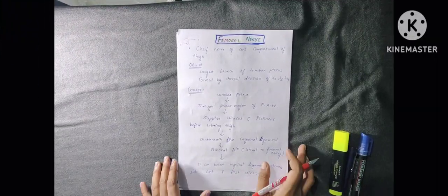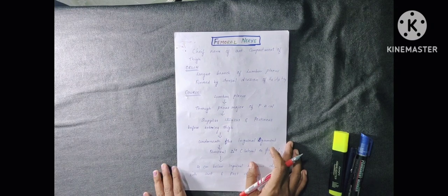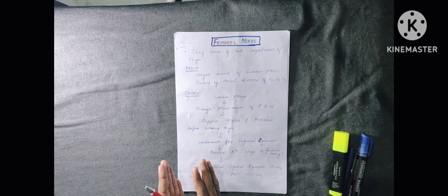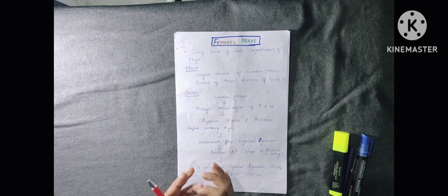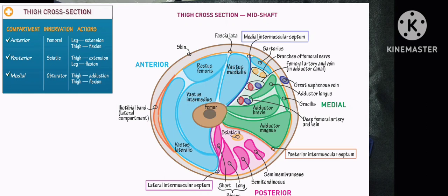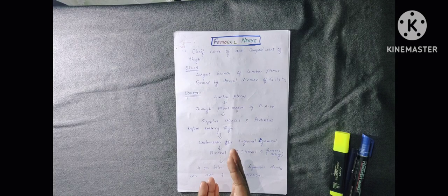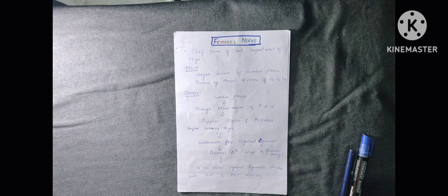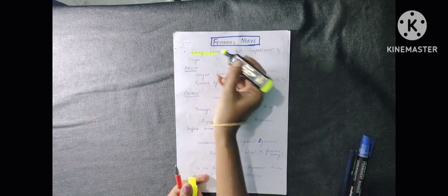Hi, hello and welcome back to my channel. In this video we will look at femoral nerve. The femoral nerve is the chief nerve of the anterior compartment of the thigh. The thigh has three compartments: the anterior, posterior, and medial. The anterior compartment muscles are supplied by the femoral nerve, the posterior compartment by the sciatic nerve, and the medial compartment by the obturator nerve.